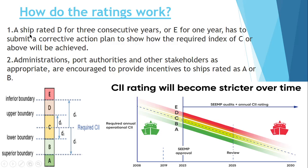A ship rated D for 3 consecutive years or E for 1 year must submit a Corrective Action Plan and show how the required index of C or above will be achieved. Administration, port authorities, and other stakeholders are encouraged to provide incentives to ships rated A or B.